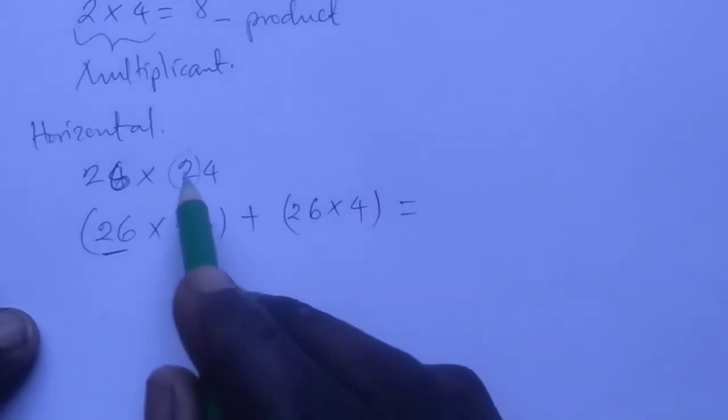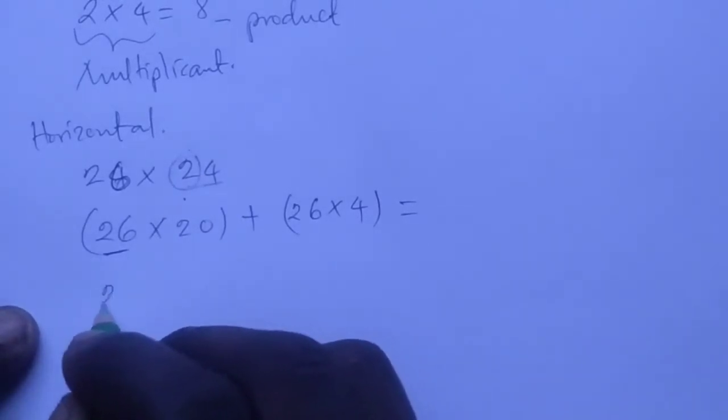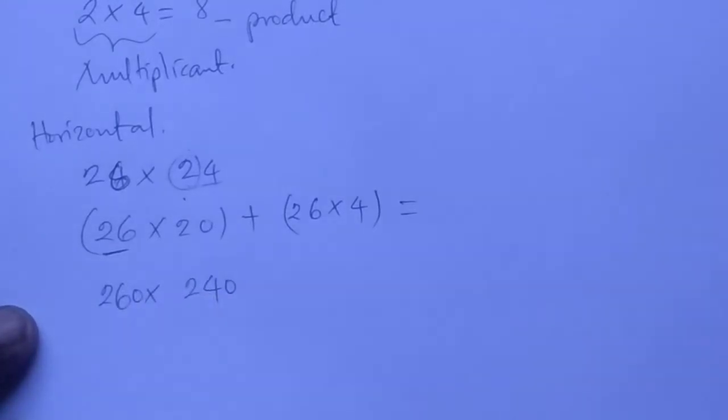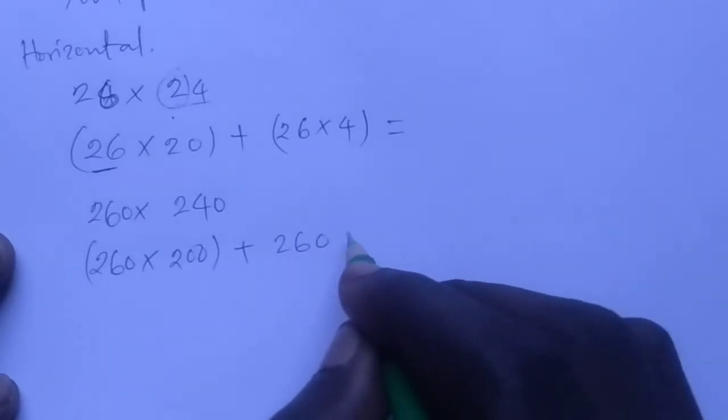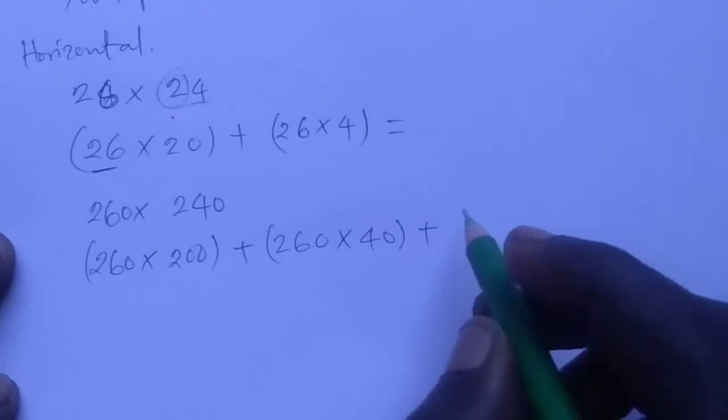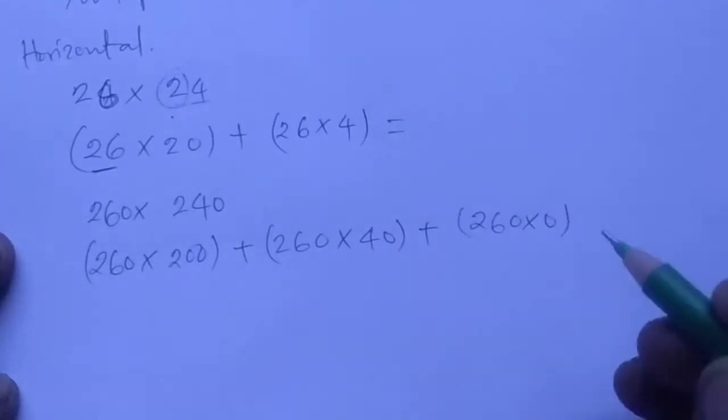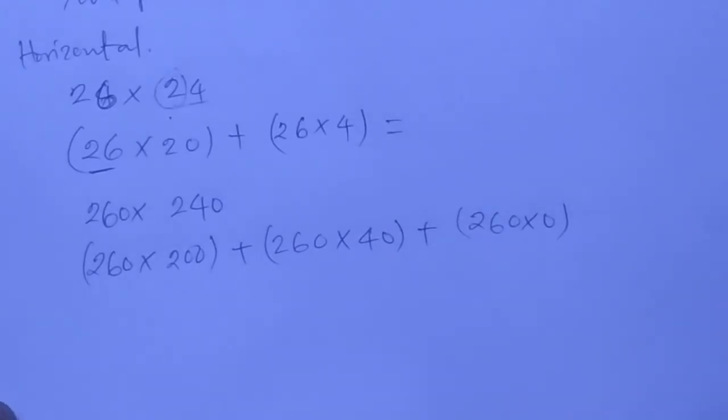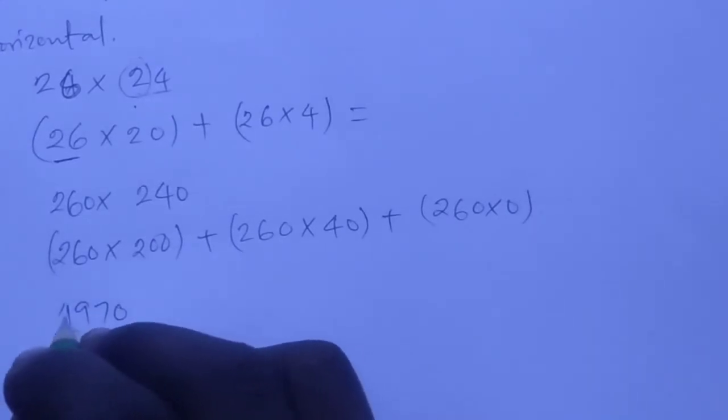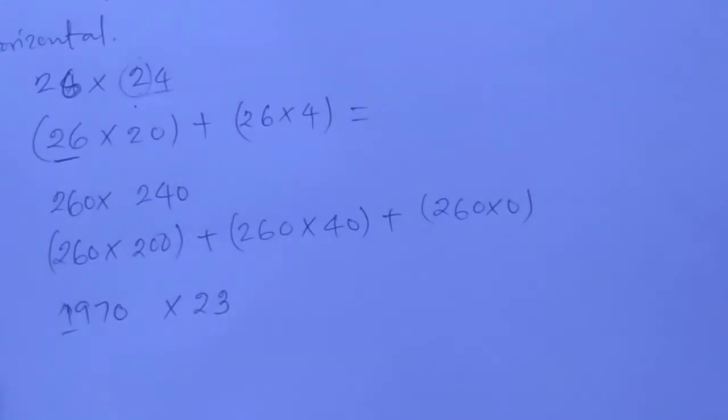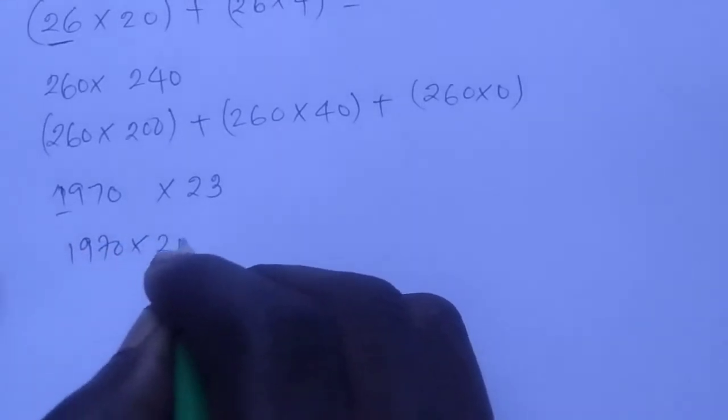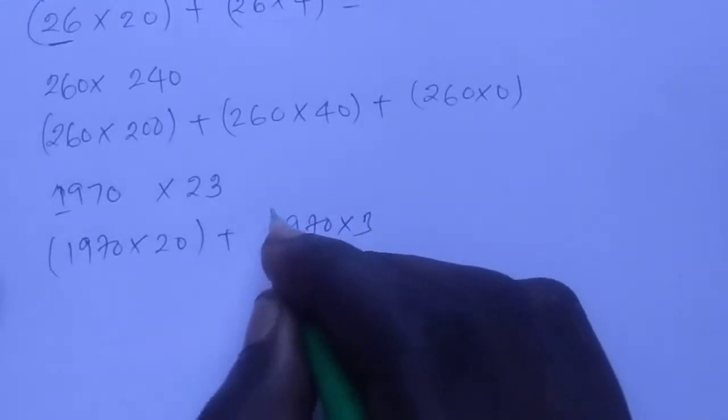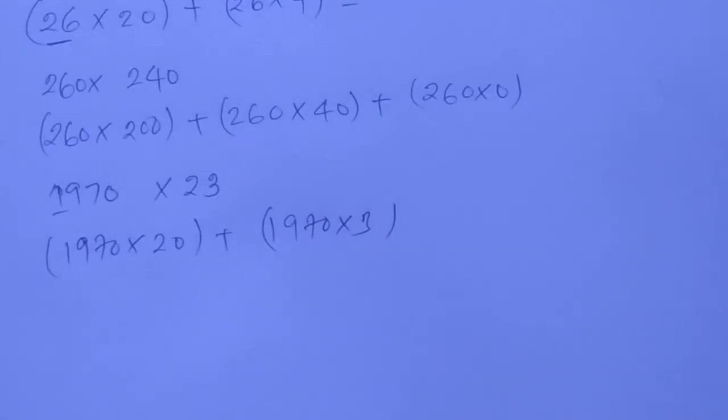We multiply this number with that number according to its place value. For example, 260 times 240 is the same as 260 times 200 plus 260 times 40 plus 260 times 0. Or like 1978 times 23, which equals 1978 times 20 plus 1978 times 3. We put each number in place value and multiply accordingly.